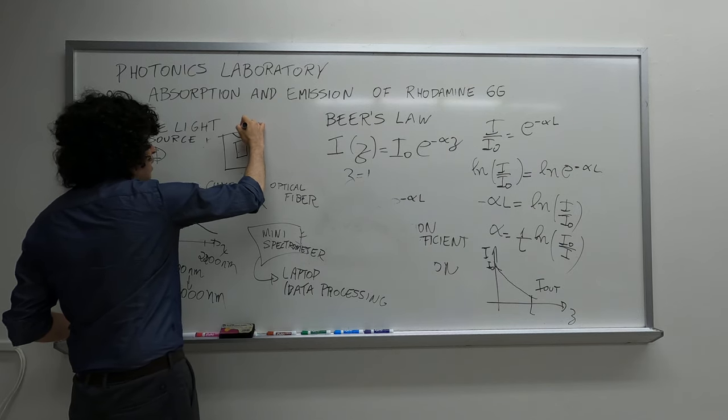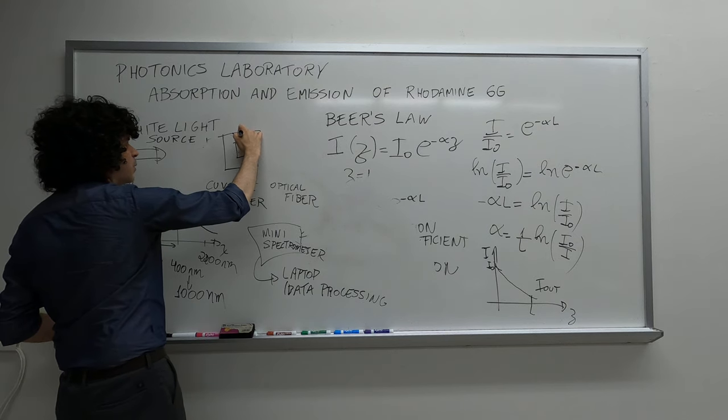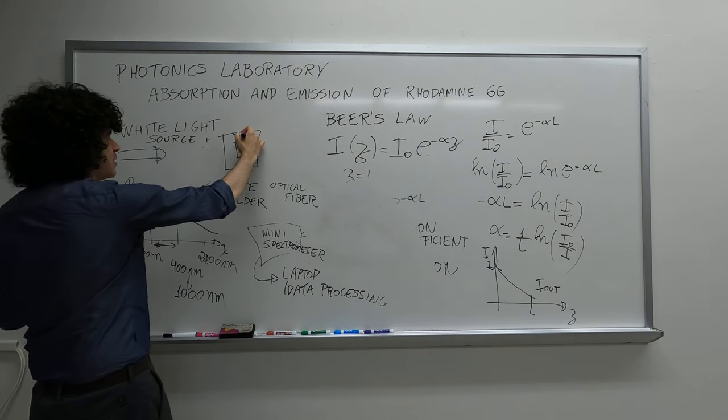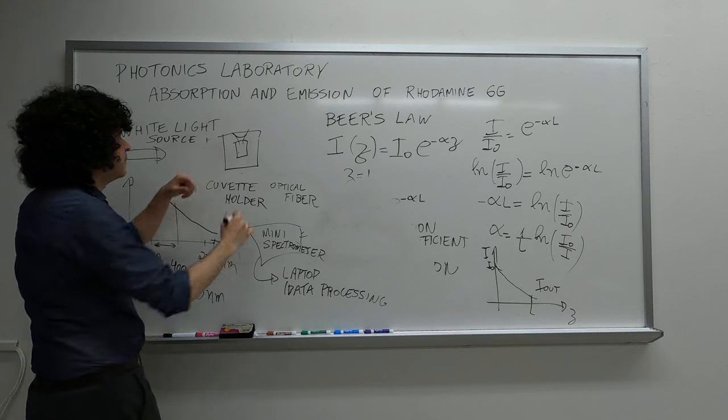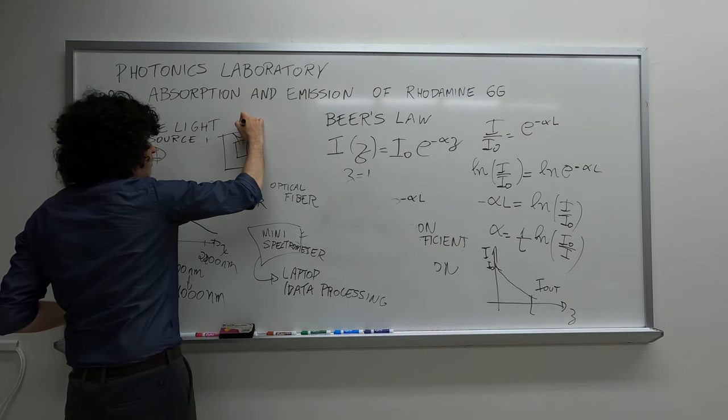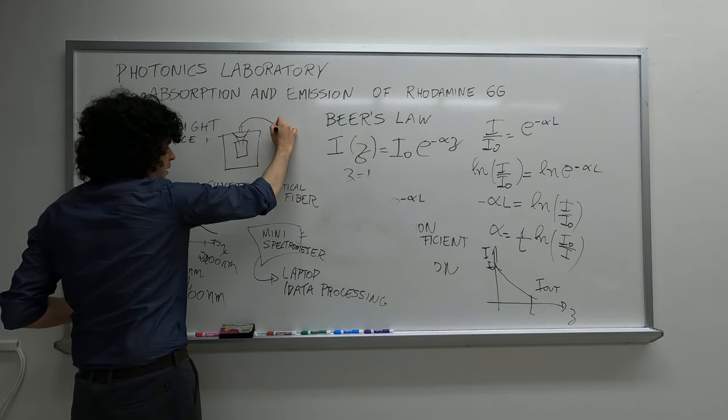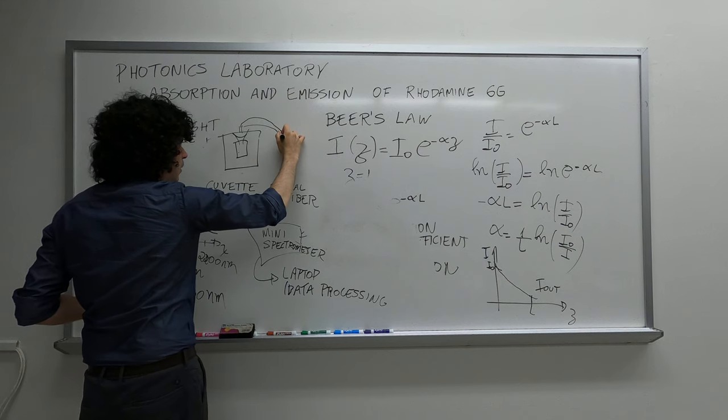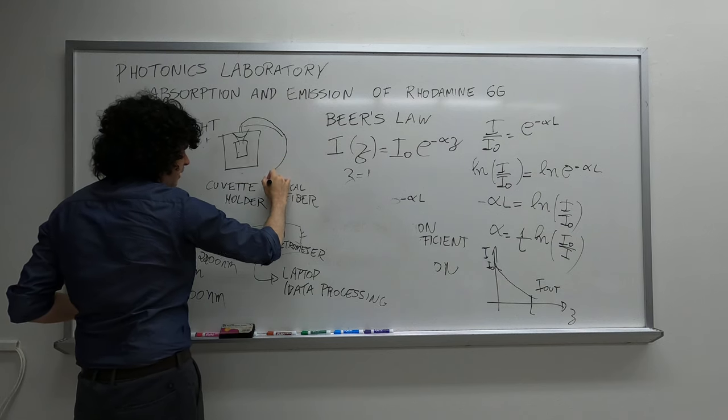And now the emitted light goes into all directions, but you collect from this side and you place optical fiber here. And from here it goes to the spectrometer.